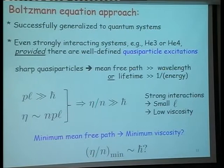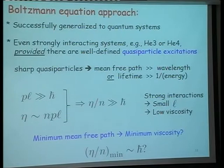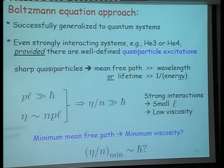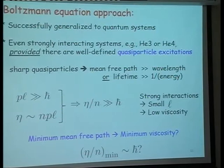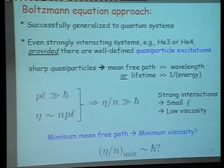By now we know that this Boltzmann equation approach has been successfully generalized. We have dilute gases of quasiparticles, so even very strongly interacting systems like helium-3 or helium-4, you can use this in appropriate regimes, provided you have sharp quasiparticles. In other words, the mean-free path is much, much greater than the wavelength. If that is true, then you immediately see from a dimensional argument that the shear viscosity divided by the number density must be much, much larger than h-bar. This might lead you to a conjecture that perhaps if you have very strong interactions, and if the mean-free path were to become very small, comparable to the characteristic wavelength, then you would be in a very low viscosity regime. So a minimum mean-free path might lead to a minimum viscosity.